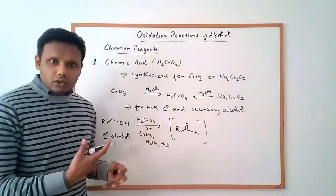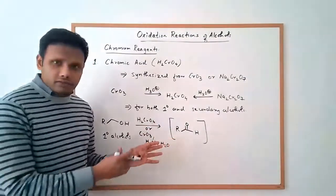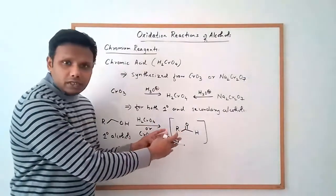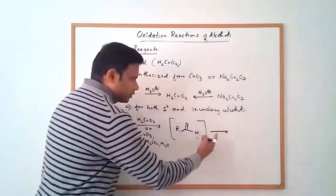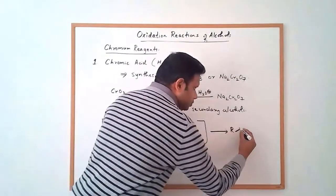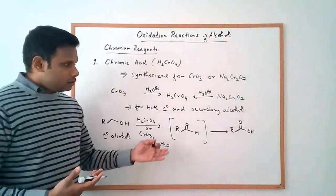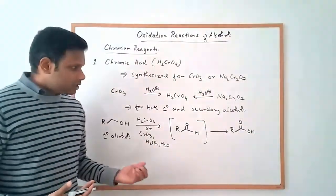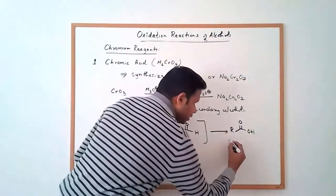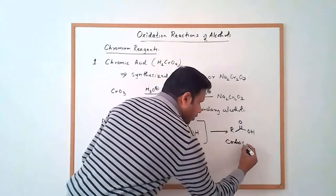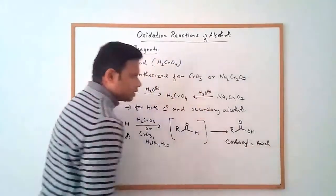Chromic acid is a strong oxidizing agent, so the oxidation does not stop at the aldehyde. You cannot really isolate the aldehyde — it is further oxidized to the carboxylic acid. So primary alcohols are oxidized all the way to the corresponding carboxylic acid.